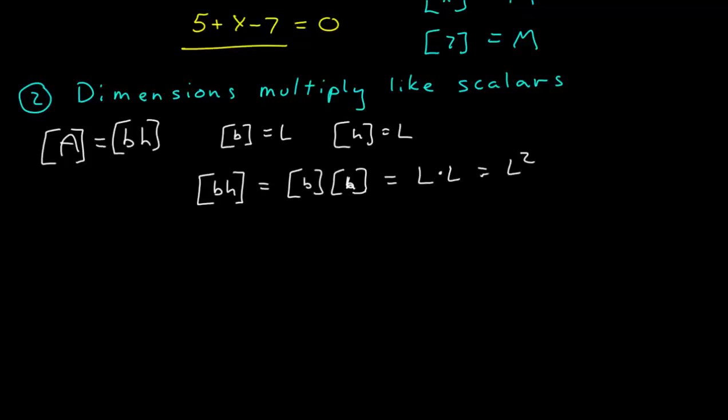Let's do one more. Imagine that I have an angle theta, which is equal to the product of a frequency omega times time. Now, you may not be familiar with frequency, but that's okay. The dimension of frequency is 1 over time. And we know the dimension of time is time.